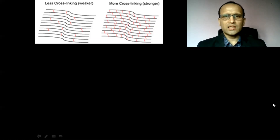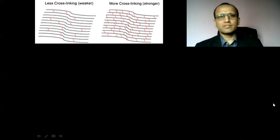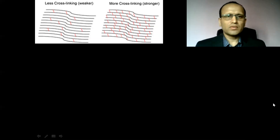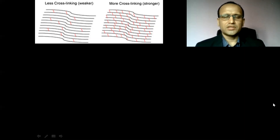To increase the strength even more, there is cross-linking of collagen fibers. In the illustration, the network of collagen fibers on the left side has less cross-linking and the network on the right side has more cross-linking. So the collagen fibers on the right side are stronger.